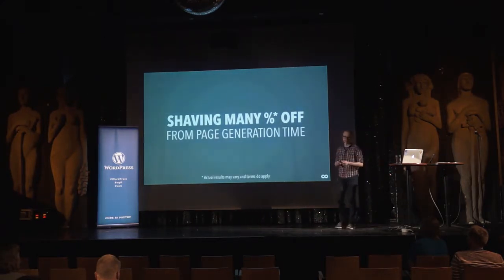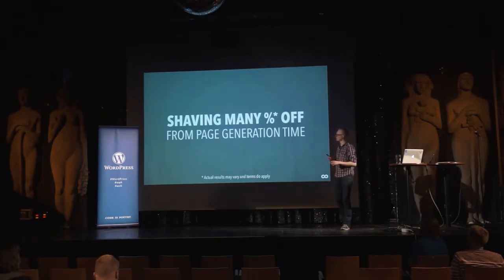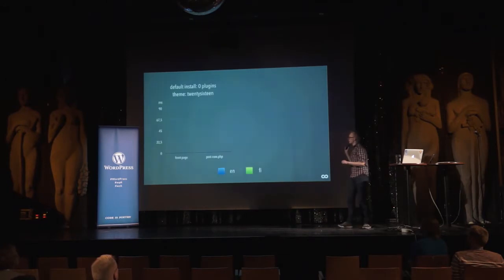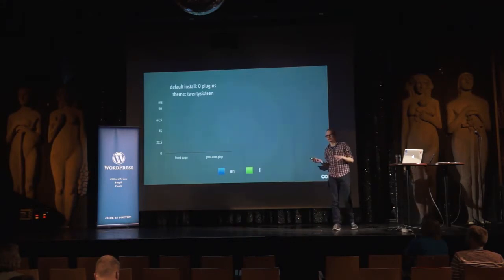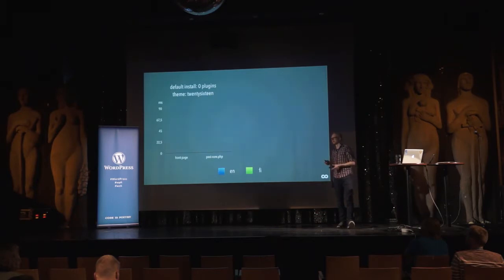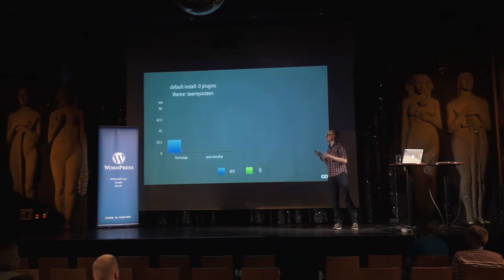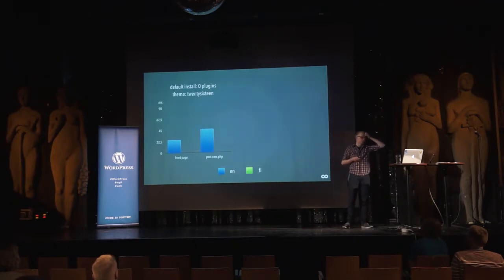Now it's time to bring in some unicorns. This has quite little to do with multilingual sites specifically, but a lot to do with sites that are not in English. Here we have page generation times for different WordPress installations. Let's start with the default install: no plugins, the 2016 theme, just default content, on a pretty decent LAMP stack. The front page generation time is 26 milliseconds, and on the admin side, the new post page is 47 milliseconds.